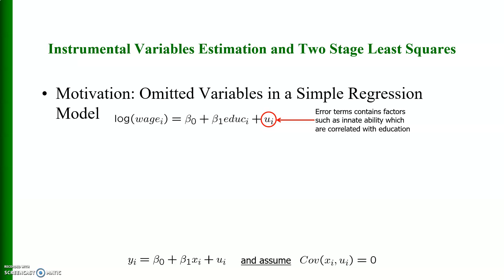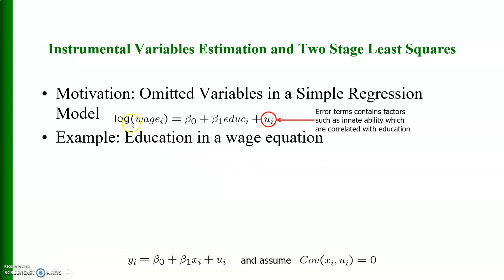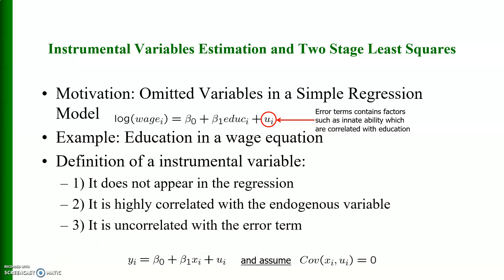Consider a regression model where log wage is determined only by education, and we exclude experience and experience squared. These two variables are omitted from this model — this is the omitted variables case. The error term u_i contains factors such as innate ability, which are correlated with education, and that may create an endogeneity issue. We may therefore use an instrumental variable.